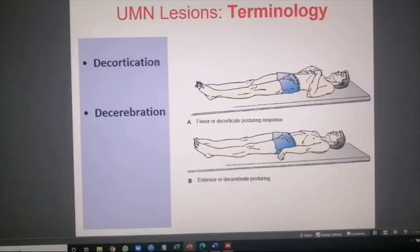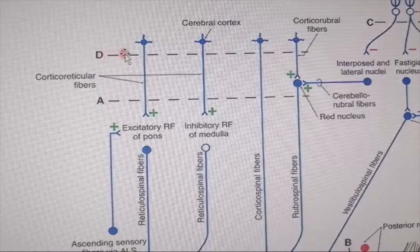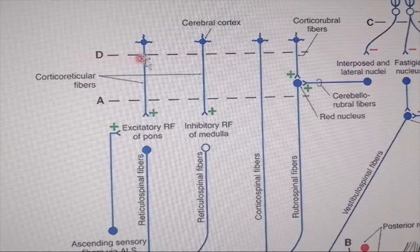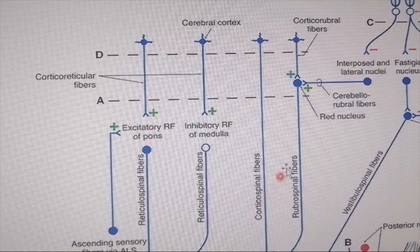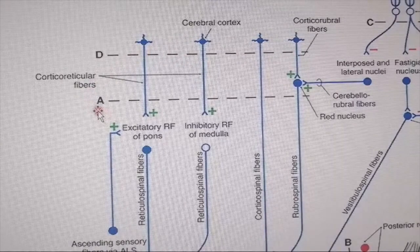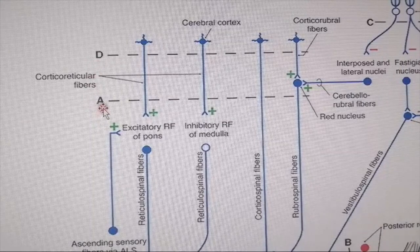To familiarize you with decortication and decerebration: there is a line D here. If you section the cerebral cortex along line D, you are removing the effect of the cortex from the rest of the CNS and hence the rest of the body — this is called decortication. This is opposed to lesion type A. The A type of lesion, shown here, is called decerebration.